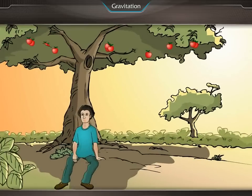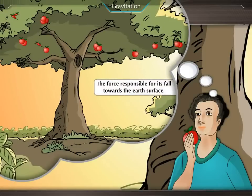Newton was sitting under a tree when an apple fell on him. The fall of the apple made Newton think. He pondered on the force responsible for its fall towards the earth's surface.